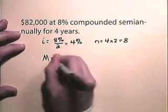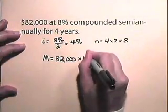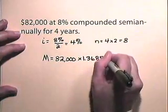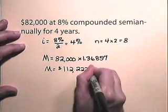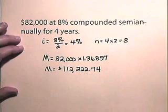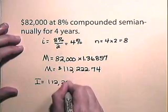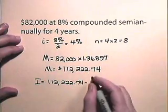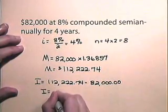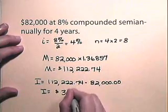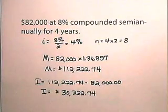The compound amount is $82,000 × 1.368457 = $112,222.74. The interest is the difference: $112,222.74 − $82,000 = $30,222.74.